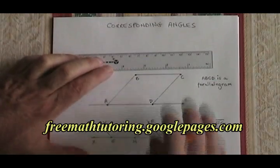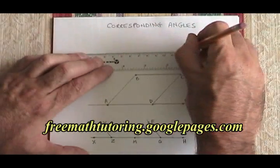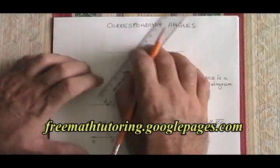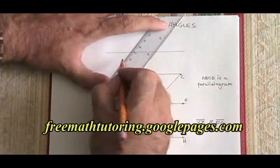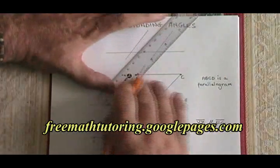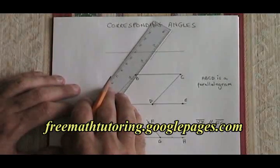Corresponding angles will happen whenever you have a situation like I'm about to draw. We have a straight line and we have two other lines that cross it, but those two lines are parallel. We know that those two lines are parallel because I drew them on either side of this ruler.